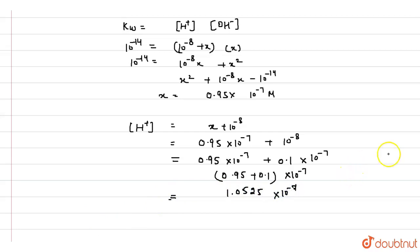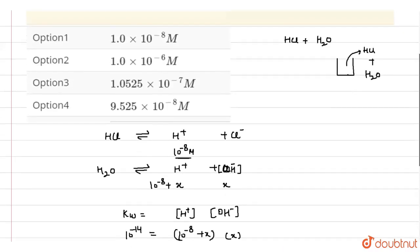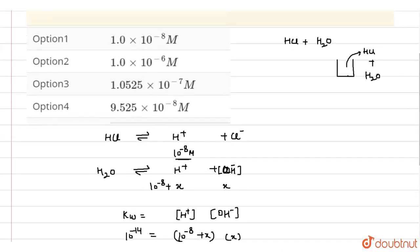After adding, the overall concentration of H⁺ ion comes out to be 1.05 × 10 raised to power minus 7 mole per litre. Therefore, option number 3 is the correct answer.